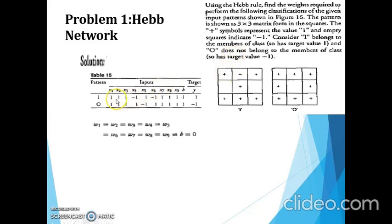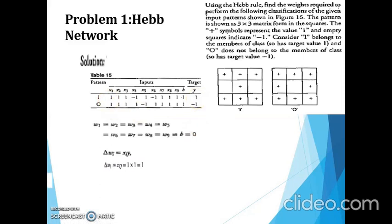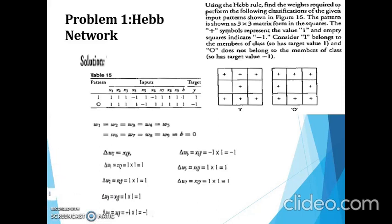The change of weight is calculated by multiplying the xi value with y. We calculate the change of weight for all 9 samples. Except for positions 4 and 6, all are positive. Only for delta_w4 and delta_w6 will the value be -1. Now we are going to update the weight.